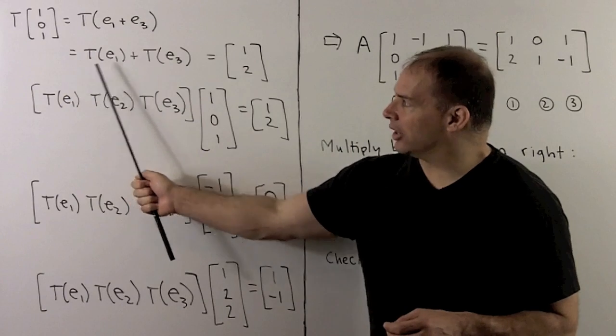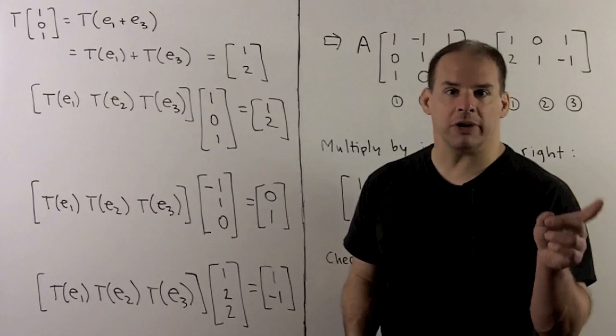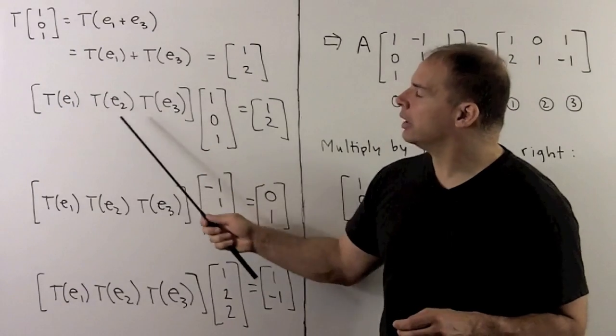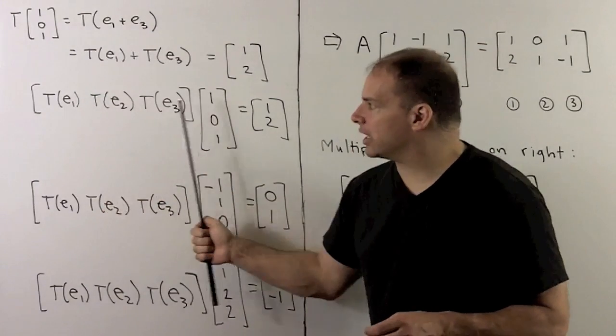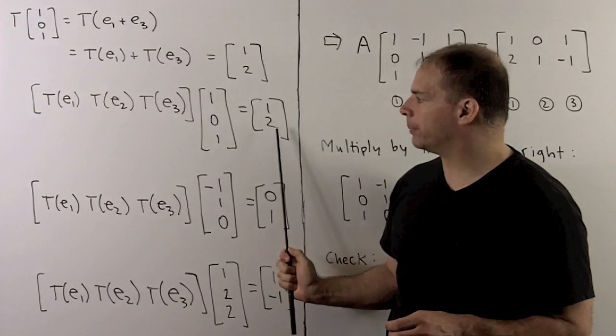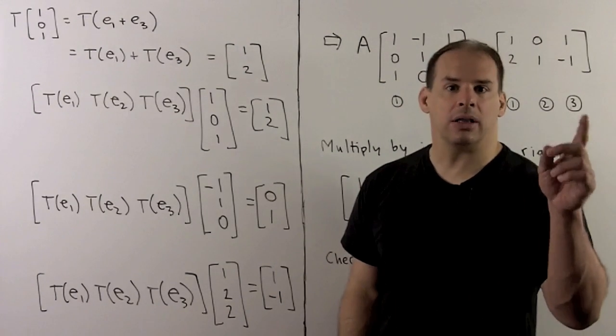Using this linear combination rule from the previous board, we have a 0 in front of TE2. So I'm just taking this matrix here, multiplying by the vector (1,0,1), and then out comes (1,2).